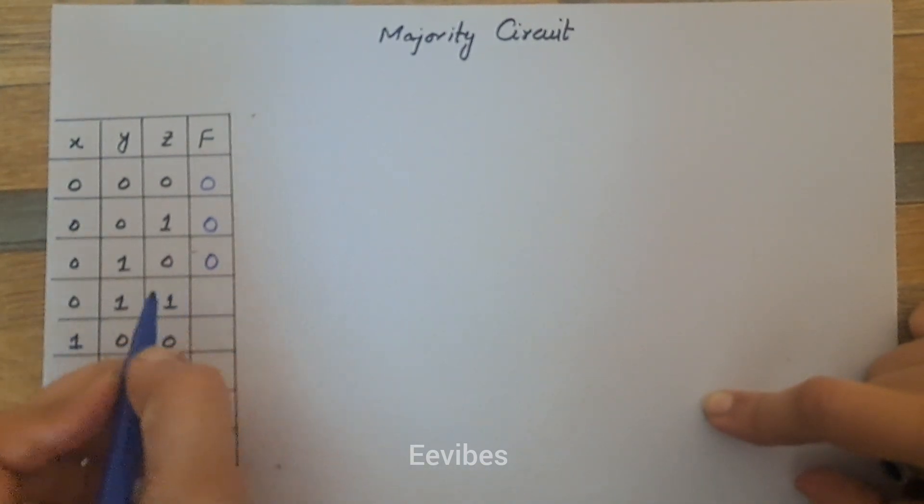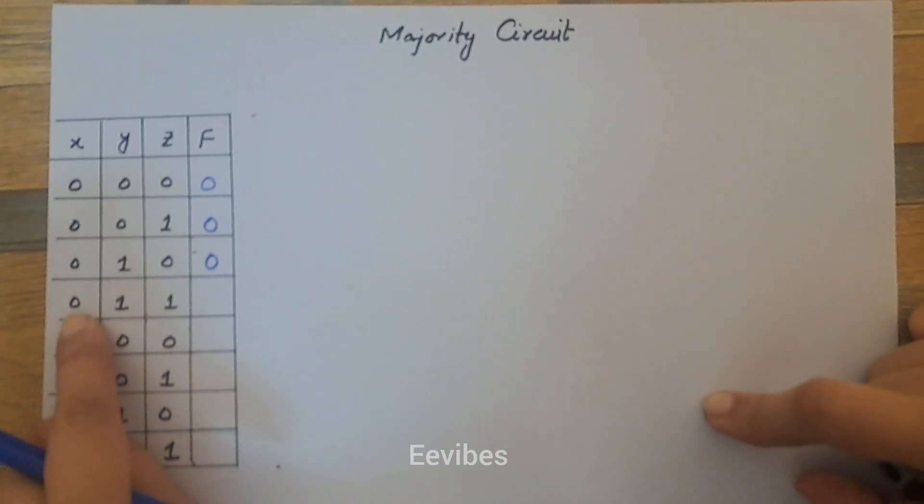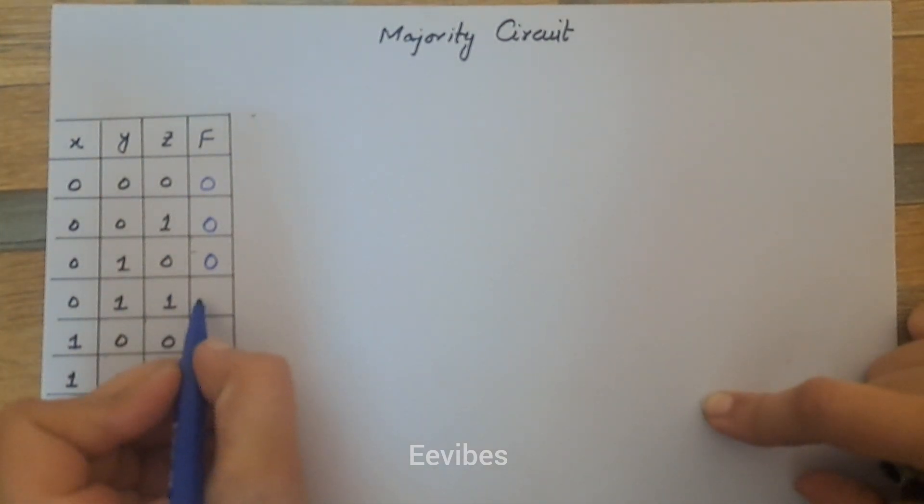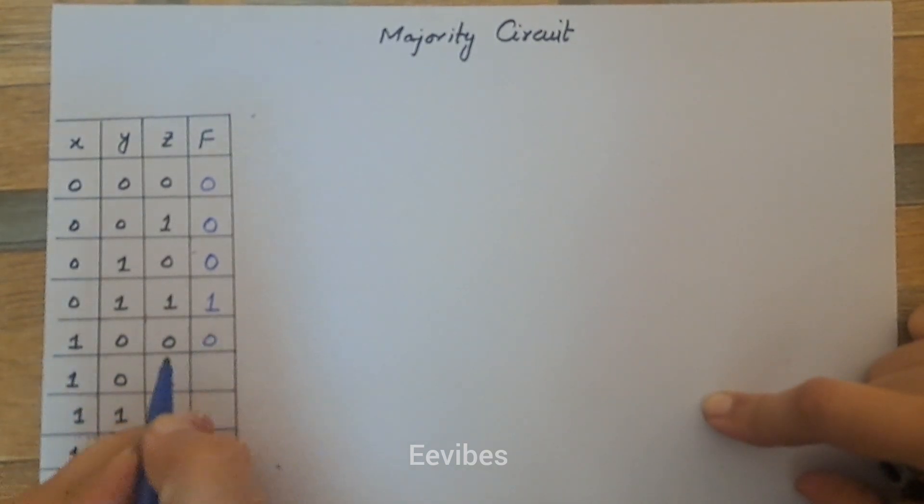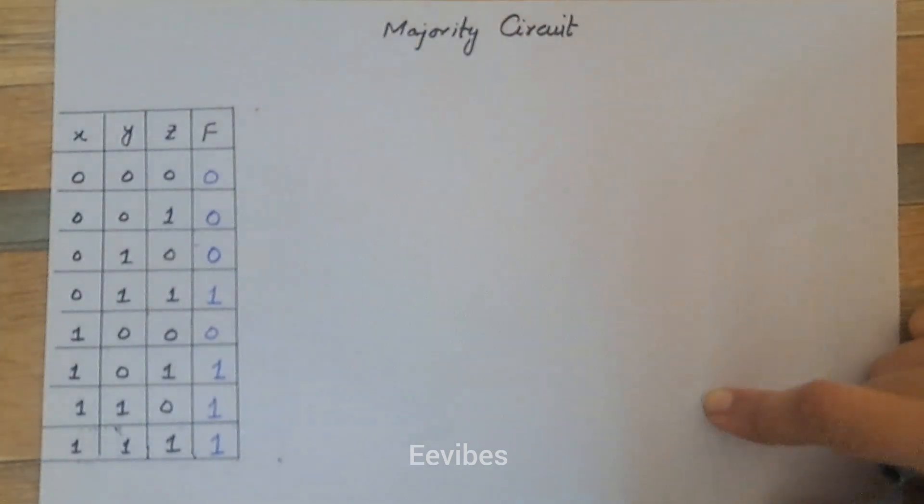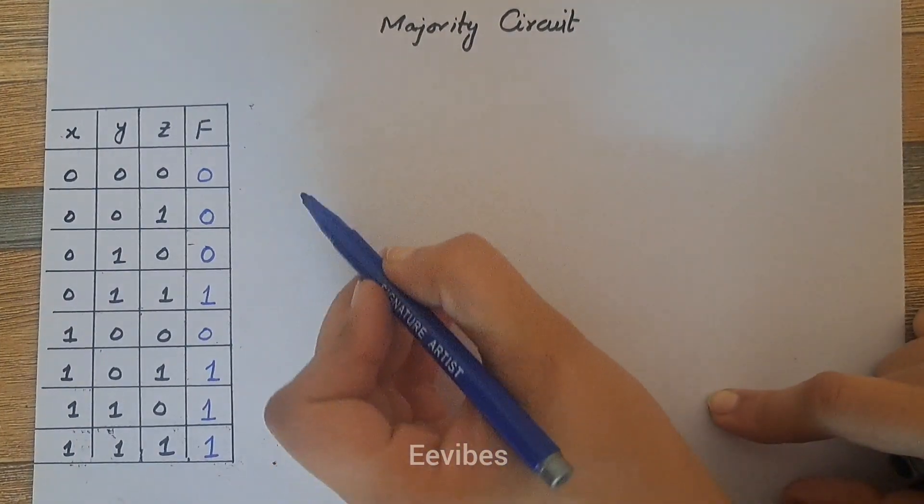Same is the case here, so the output function will be equal to zero. But now for this binary combination you can see there are more number of one bits as compared to number of zero bits, so two one bits are present while single zero bit is present, so the output function will be equal to one, then zero, then one, then again one, and finally one. So in this way you will fill the truth table.